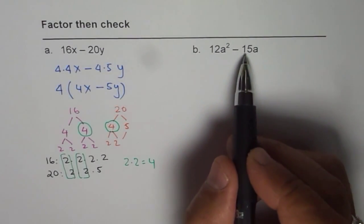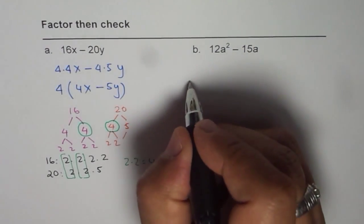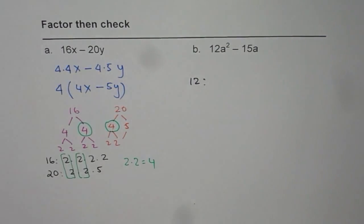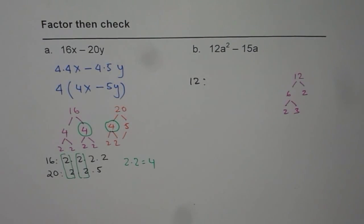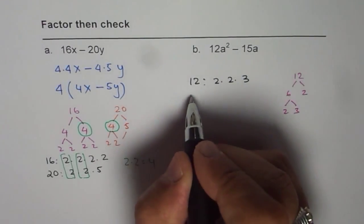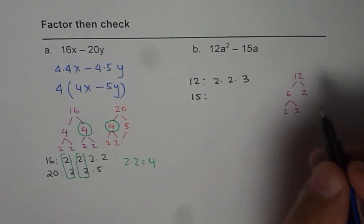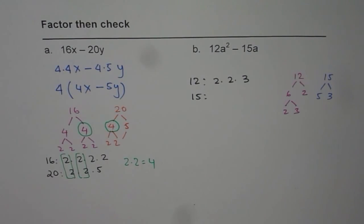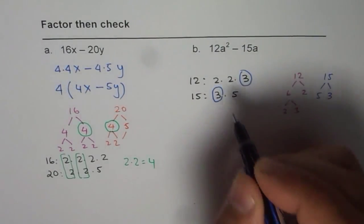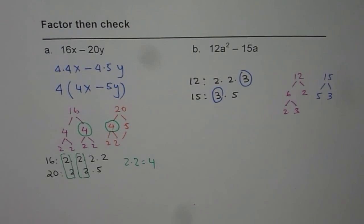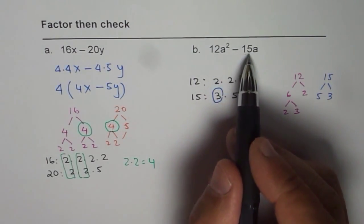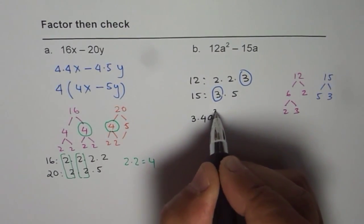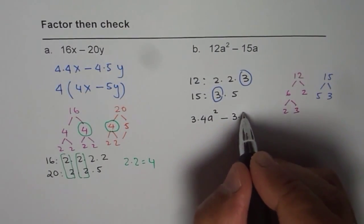We have 12a squared minus 15a. Let us find the factors for 12. Using prime factorization, 12 is 6 times 2, and 6 is 2 times 3, so the prime factors of 12 are 2 times 2 times 3. Similarly, factors for 15 are 3 times 5. Looking at both lists of factors, the common factor between 12 and 15 is 3. So 12a squared minus 15a can be written as 3 times 4a squared minus 3 times 5 times a.